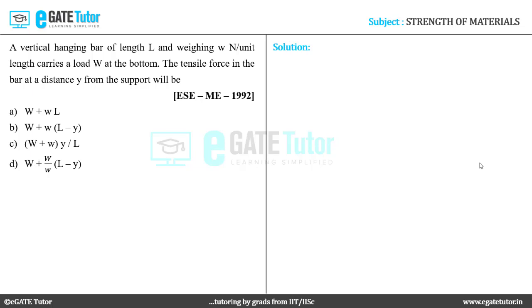To answer this question, let us consider a vertical bar hanging from the support as shown here. It has a length capital L which is subjected to a tensile force of magnitude W at the bottom. It is also having a weight of small W Newton per unit length.